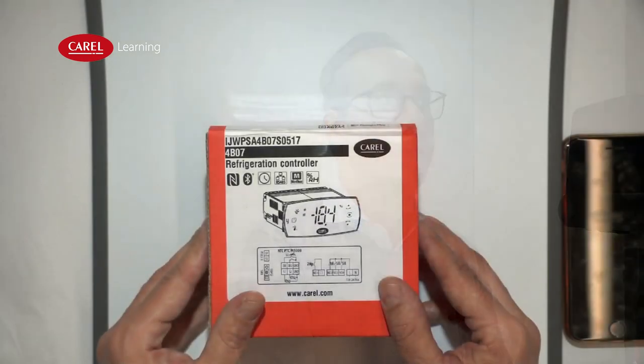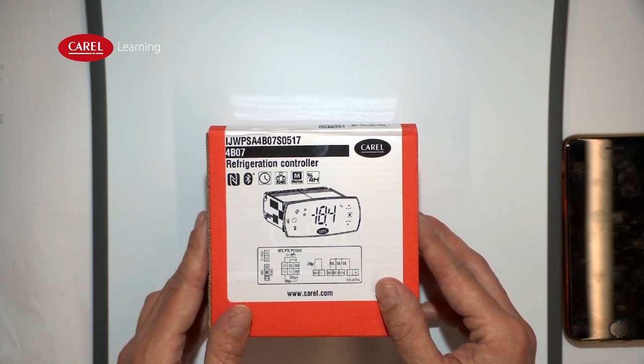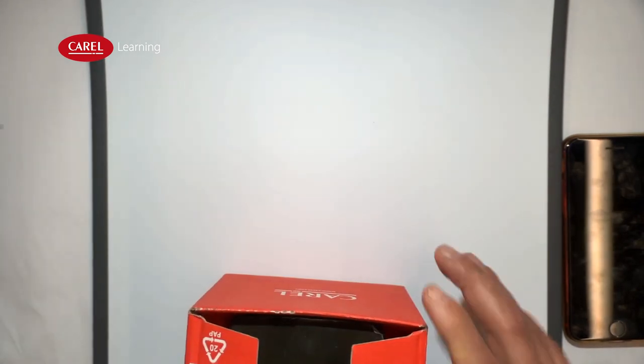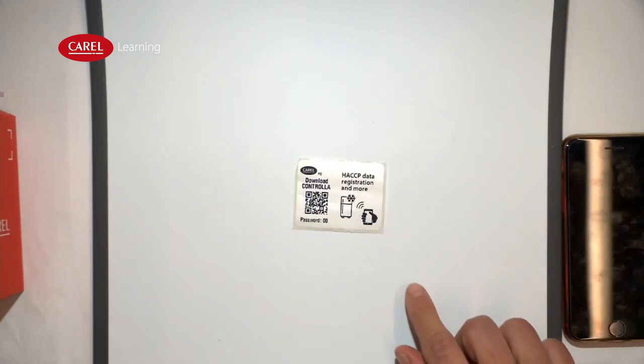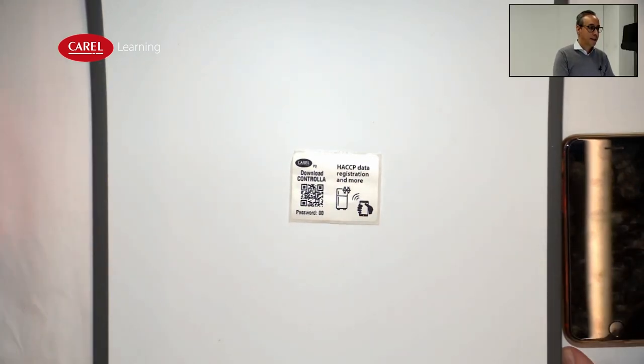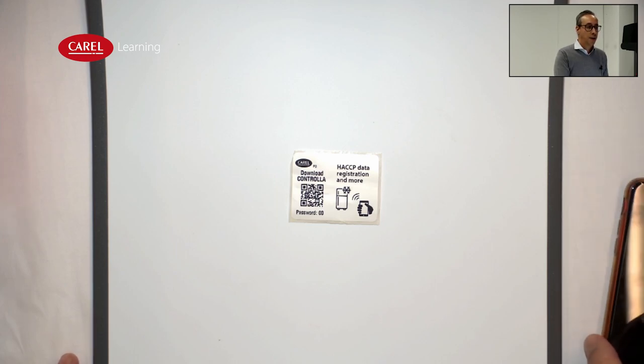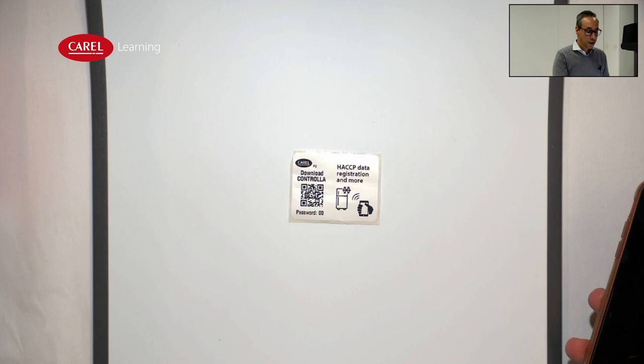Now we will see how to download a configured controller — the app designed for the end user. Inside the box of the control that has the Bluetooth connection, there is a sticker that can be used by the installer to explain how to download the controller app to the end user.